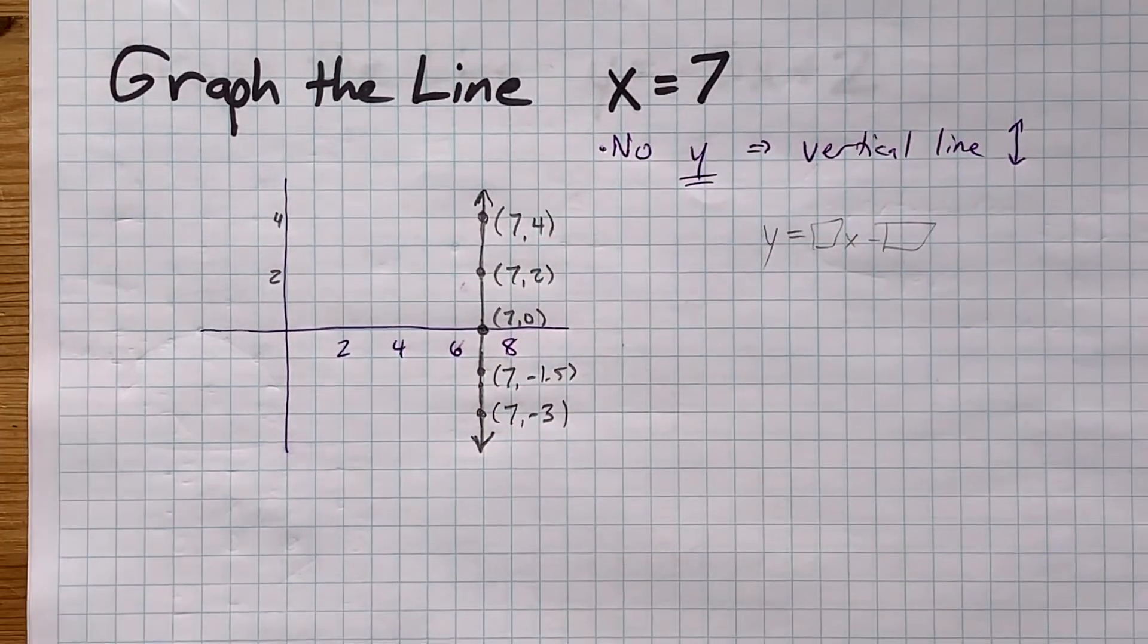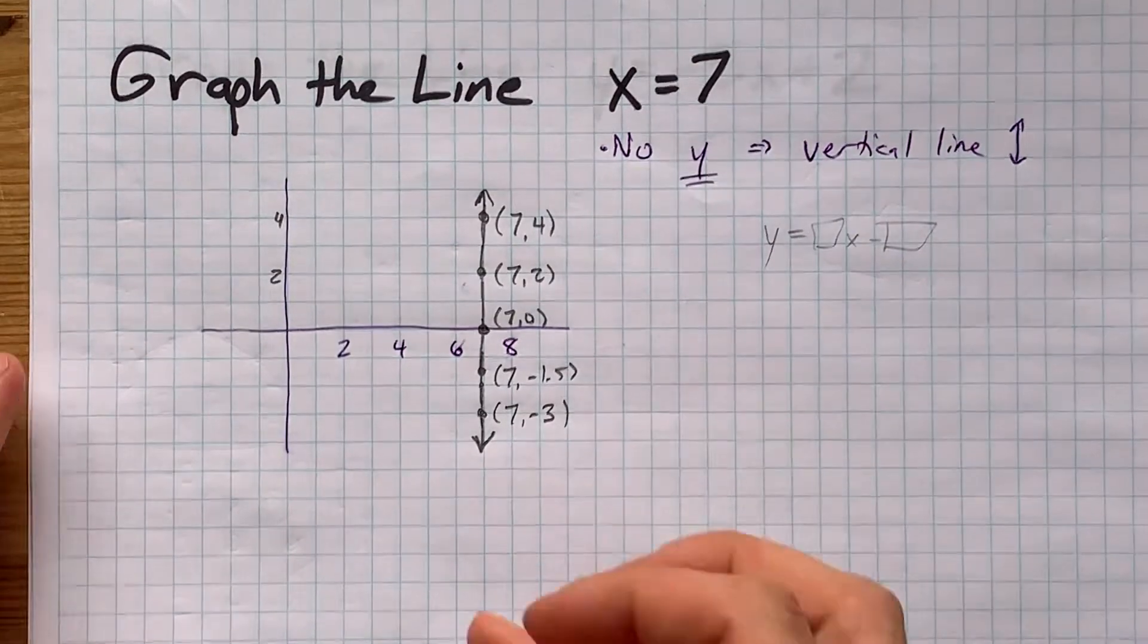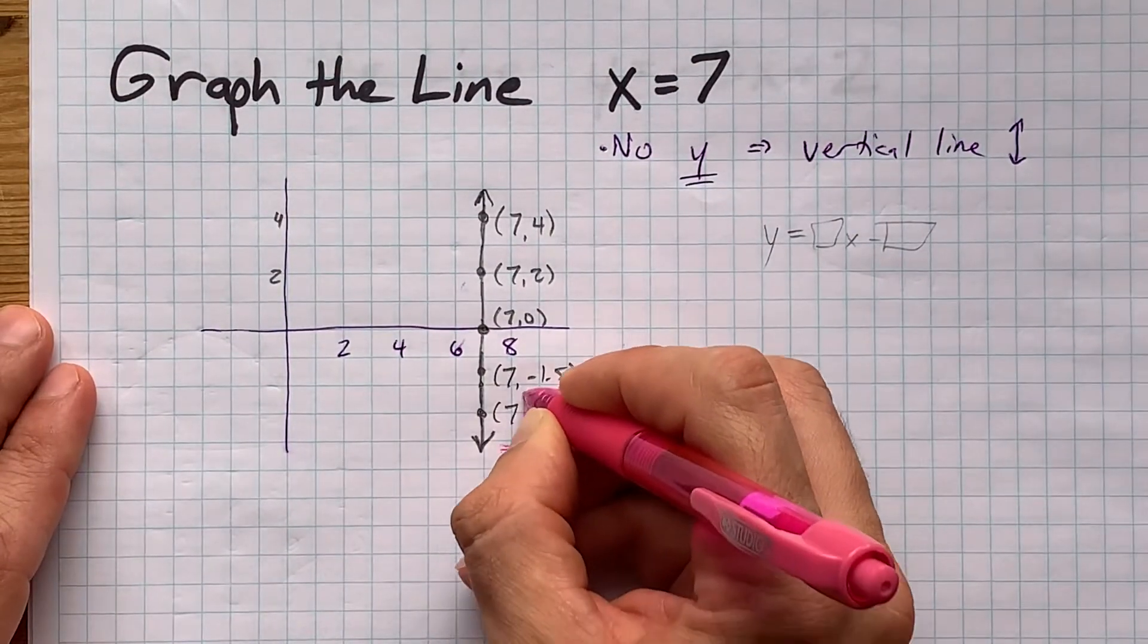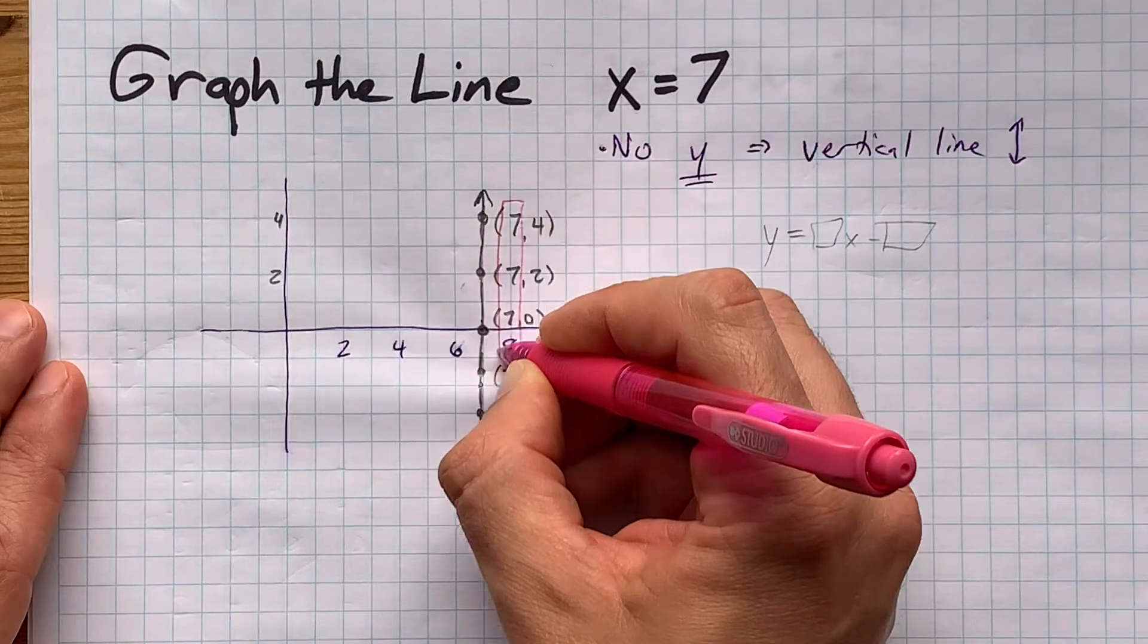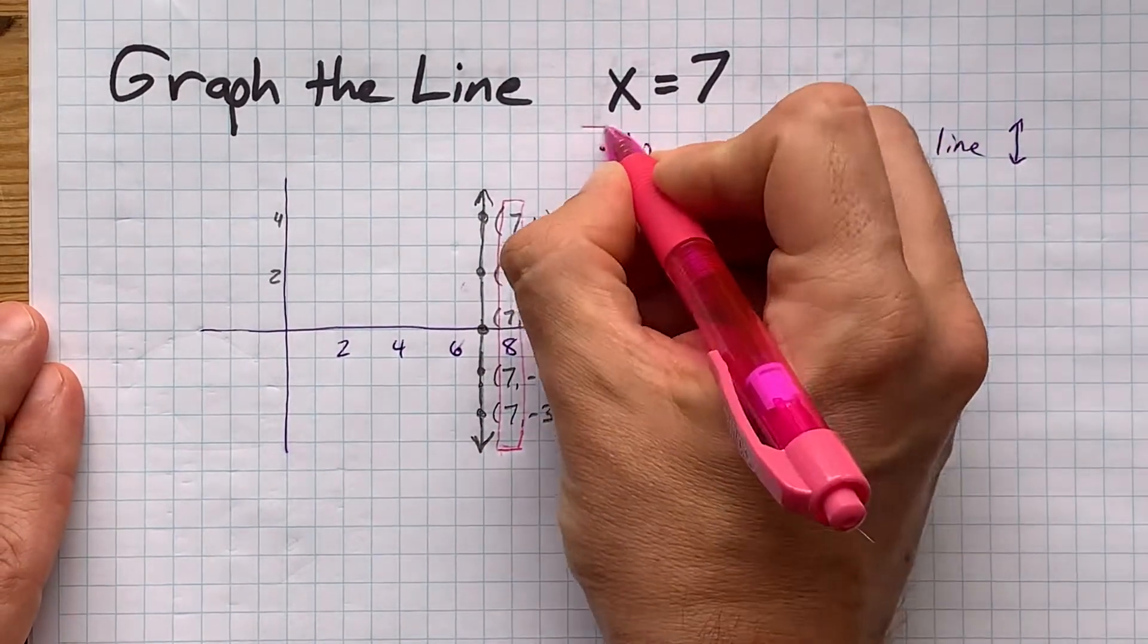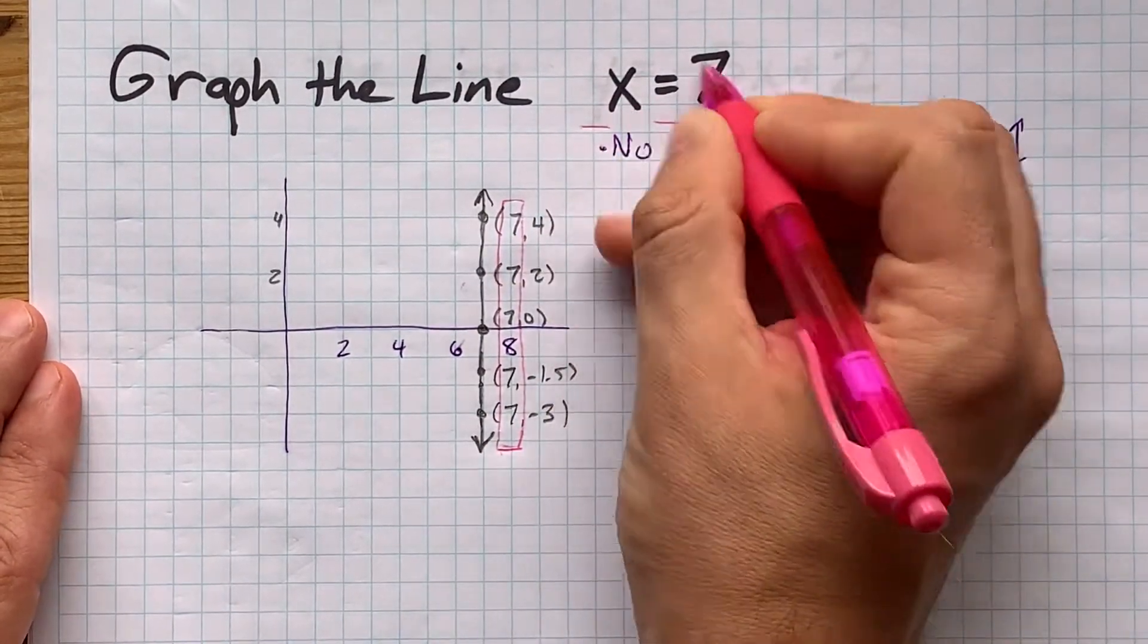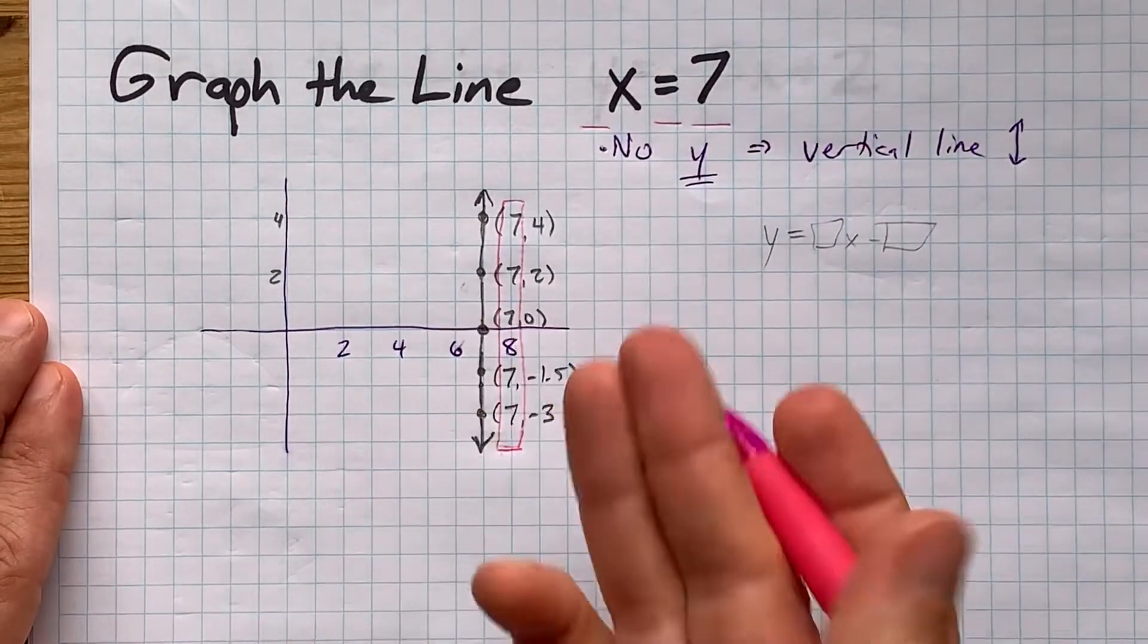What do all of these have in common? Maybe it's obvious to you now, but what they have in common is that all of the x's are exactly 7. Get it? x is 7 is what's defining the set of points that are on this line.